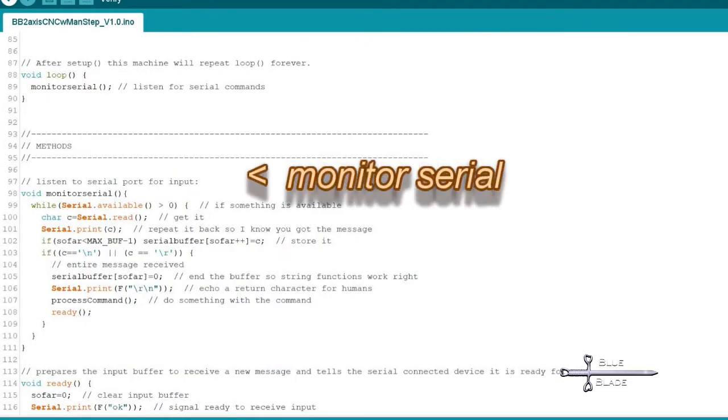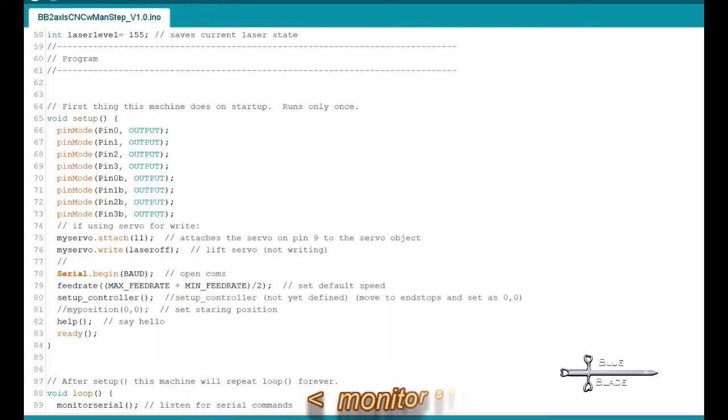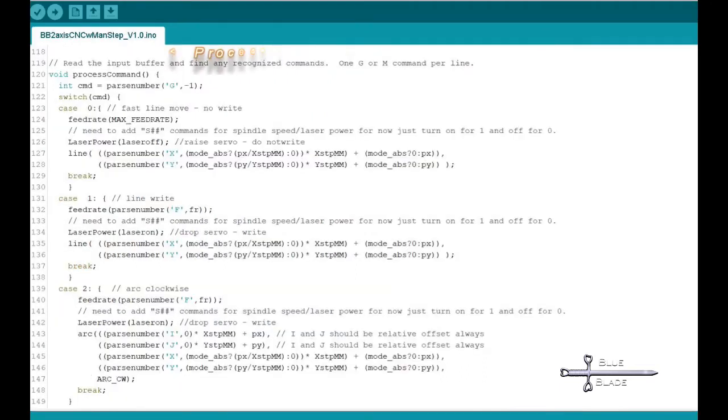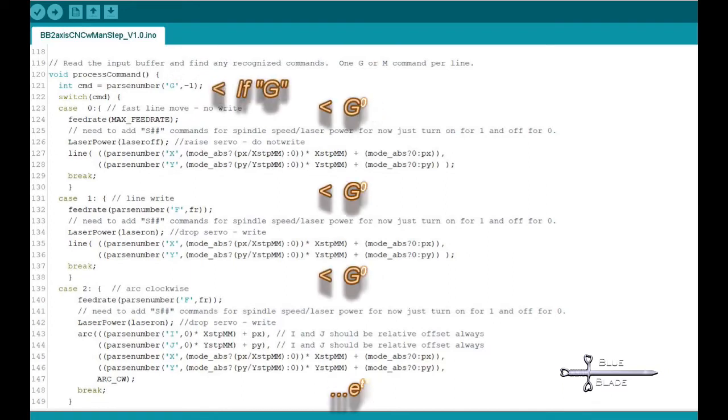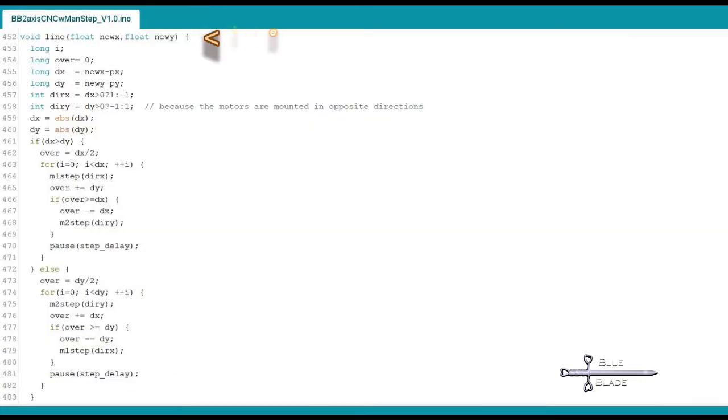The basic operation is such. It captures serial input with the monitor serial function. This is the only thing we have in our loop. If the monitor serial detects input, it triggers the process command function. This parses the command to find if it starts with a G or an M, and then based on what number follows, it calls the other functions to perform the requested action, which is the line or arc function. Any actual movement is done by the line function.